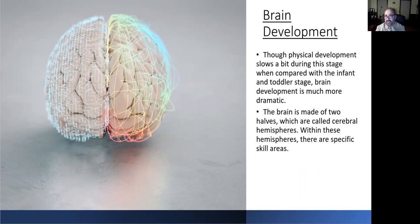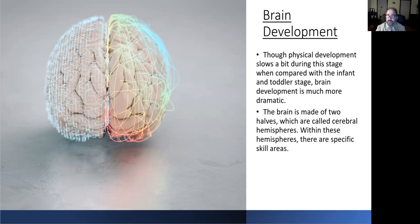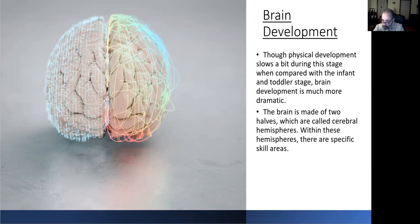Looking at ages two to six, we're looking at brain development. Though physical development slows a bit during this stage compared to the infant and toddler brain, brain development is much more dramatic. The brain is made of two halves called cerebral hemispheres. Within these hemispheres there are specific skill areas. In the left hemisphere: logic, language, writing, and math skills. On the right side: fantasy, creativity, music, and art. Though each hemisphere has very different functions, they almost always come together and coordinate. This is called the process of lateralization.